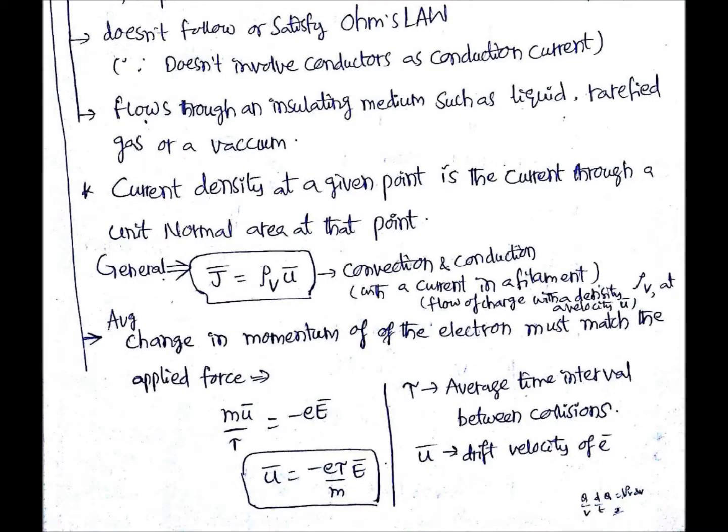The leftmost line is for conduction current density and the next line is for convection current density. Convection current density does not follow or satisfy Ohm's law because it does not involve conductors. It flows through an insulating medium such as liquid, rarefied gas, or a vacuum.